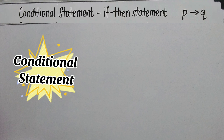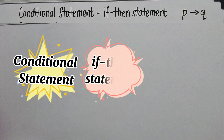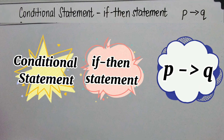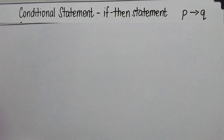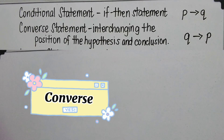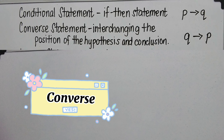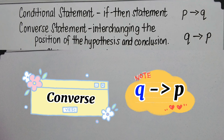A conditional statement is an if-then statement that symbolizes P implies Q. Now, we go to the definition of the converse. A converse statement is formed by interchanging the position of the hypothesis and conclusion, and it symbolizes Q implies P.